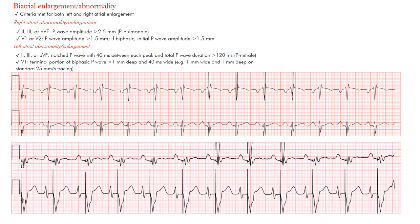Let's review the right atrial enlargement criteria. When we look for atrial abnormalities, we're looking at the P wave — whether it's in leads II, III, aVF, or lead V1 or V2. In right atrial enlargement, we look at the inferior leads for peaking of those P waves.